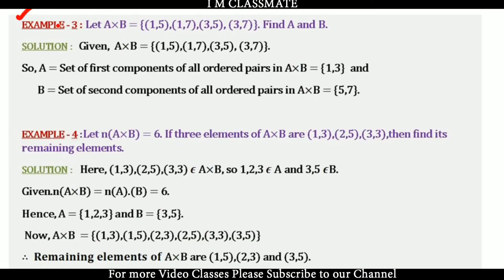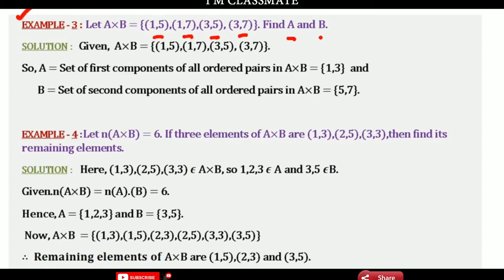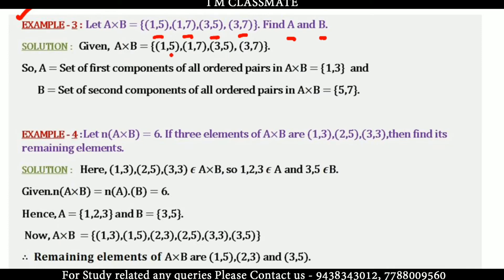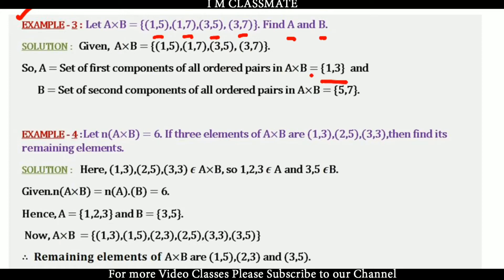Example 3. Let A cross B have elements (1, 5), (1, 7), (3, 5), (3, 7). Find A and B. From the ordered pairs, the first components give set A = {1, 3}, and the second components give set B = {5, 7}.